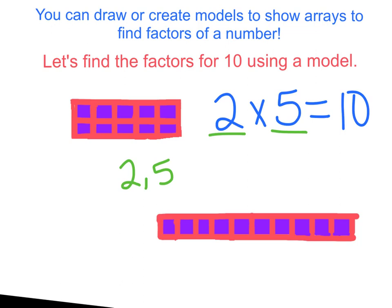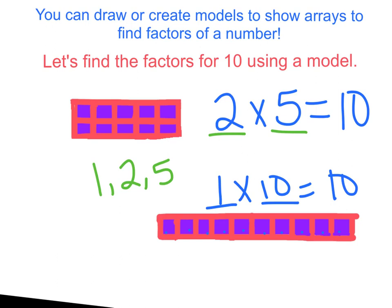Now let me look at my next array. I have 1 row, so I know I'm going to have 1 as my first factor. And there are 10 in that row, so I know my factors are going to be 1 and 10. So putting together all my factors so far: 1, 2, 5, and 10. Those are my factors of 10.